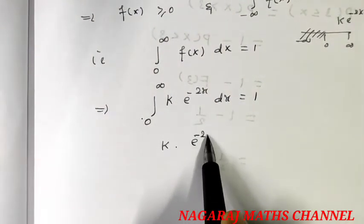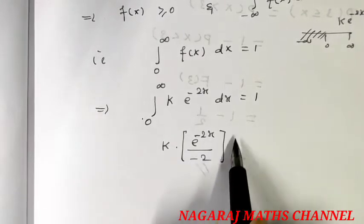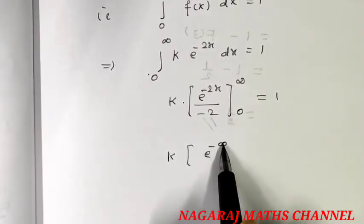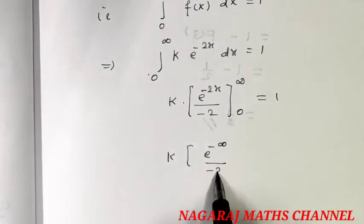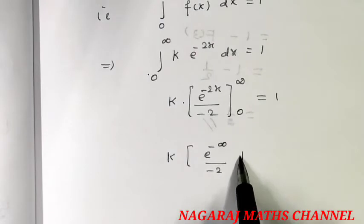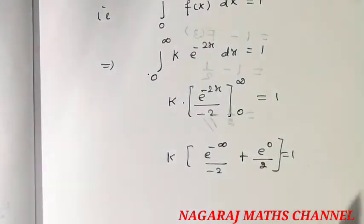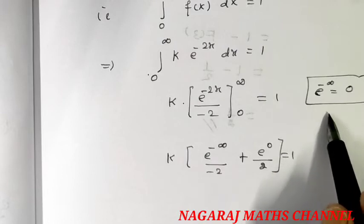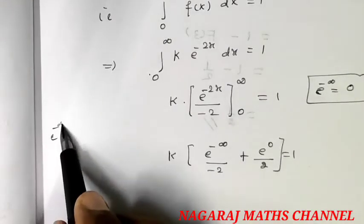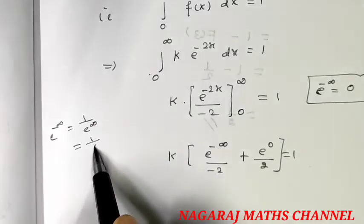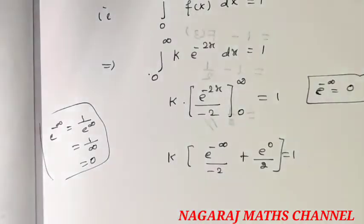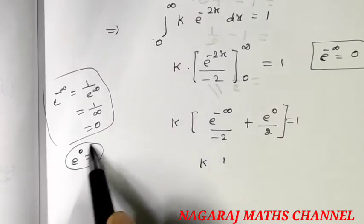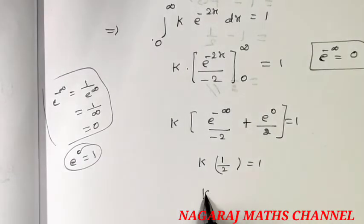Integrating, e to the power of minus 2x gives e to the power of minus infinity equal to 0 at the upper limit, and at the lower limit x equals 0. Evaluating gives k times the result equal to 1, so k equals 2.